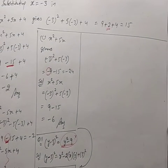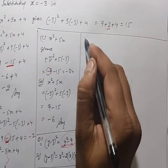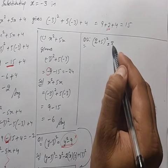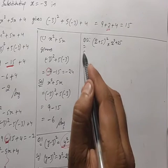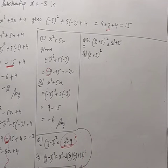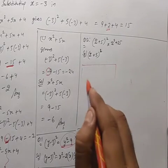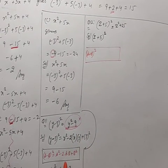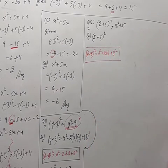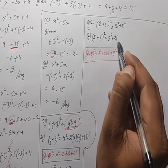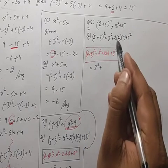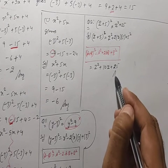Question 12: (z+5)² = z²+25 is given — this is definitely wrong. Solution using identity (a+b)² = a²+2ab+b²: (z+5)² = z²+2×z×5+5² = z²+10z+25. The correct answer is z²+10z+25.